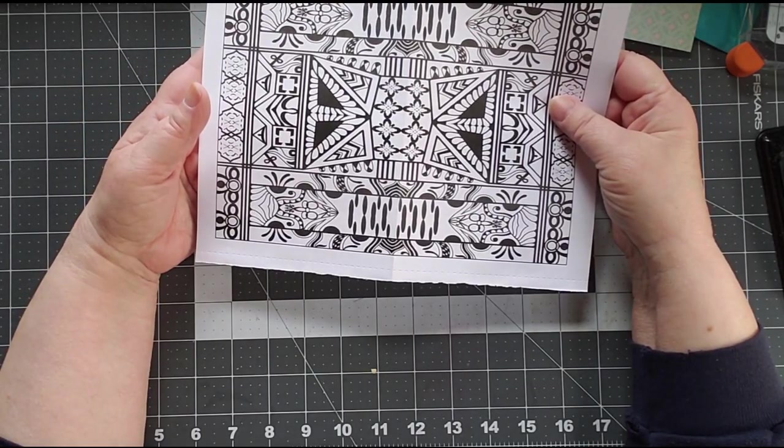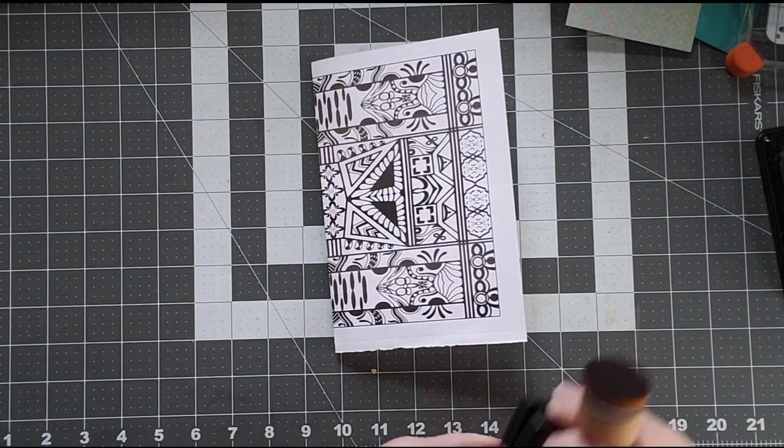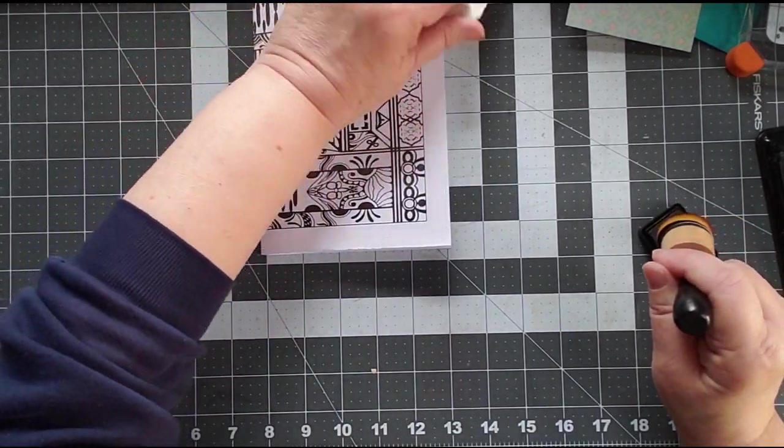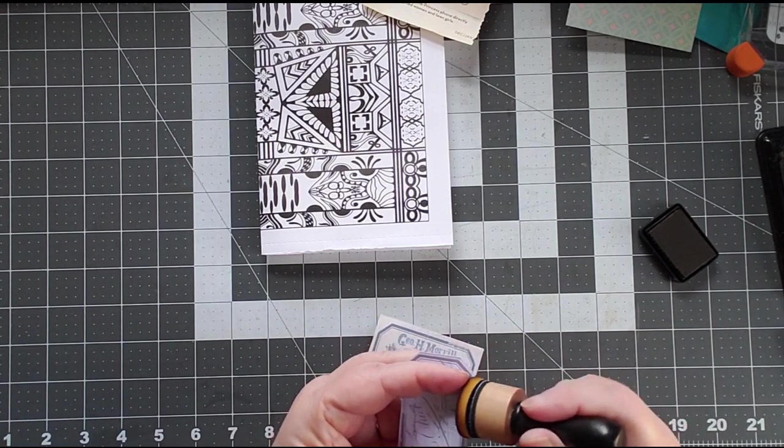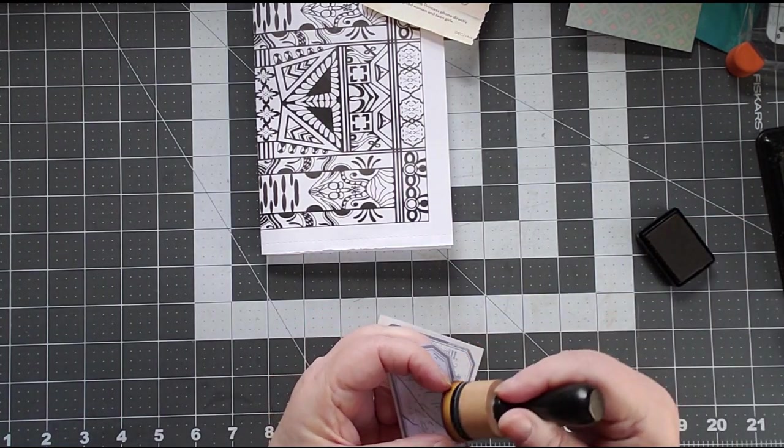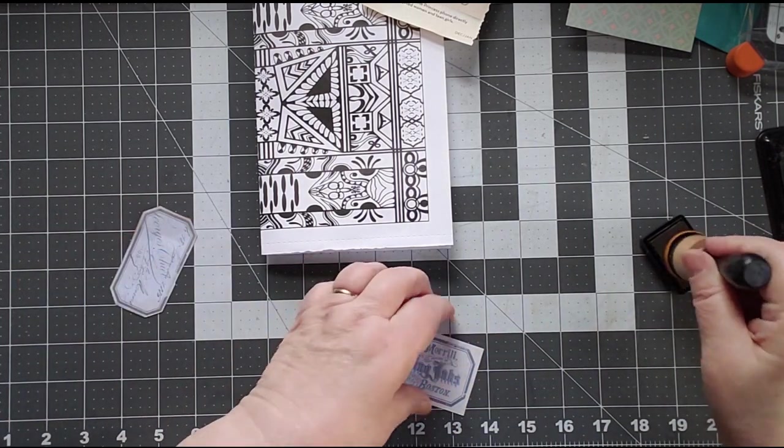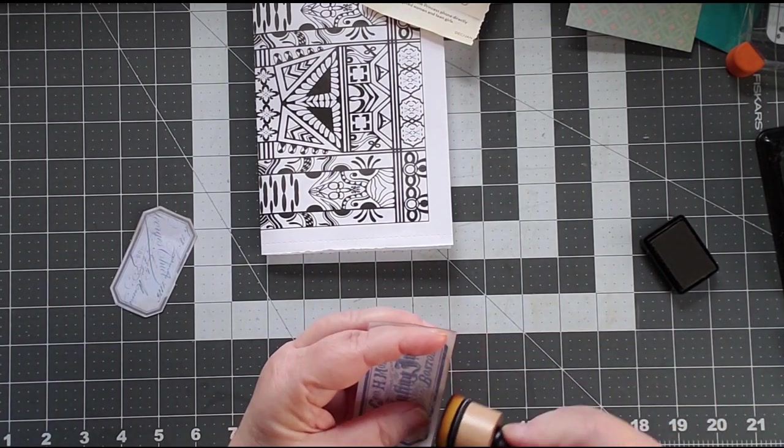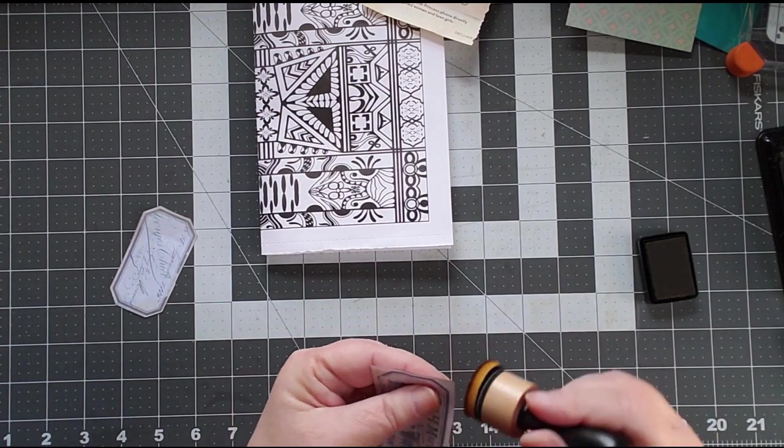And then, of course, the last and the final, number 10. And these really aren't in any sort of order. Ink those edges. Grab all that fussy cutting that you have done and ink those edges. If you like an edged signature page, it's also a great opportunity to cut the signature or to do the signature page.